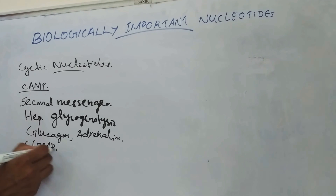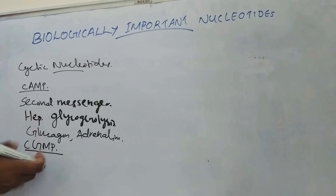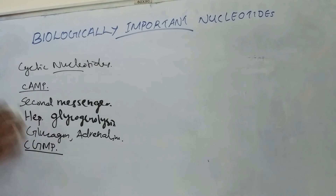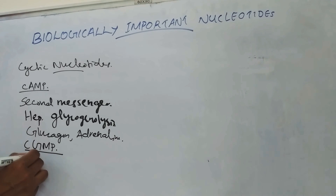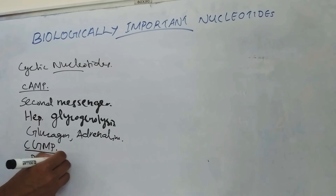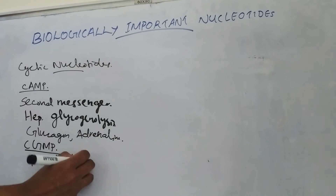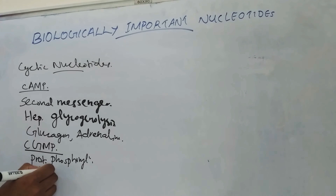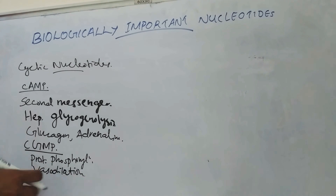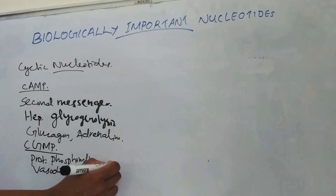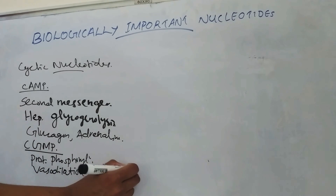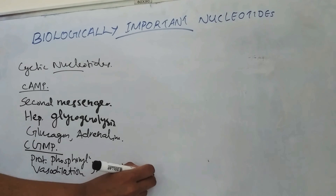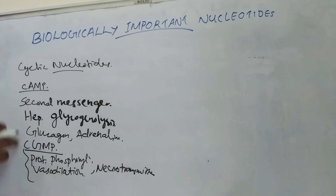Cyclic GMP also has a variety of functions — it has a role in phosphorylation of protein, in vasodilation, and in the action of neurotransmitters.